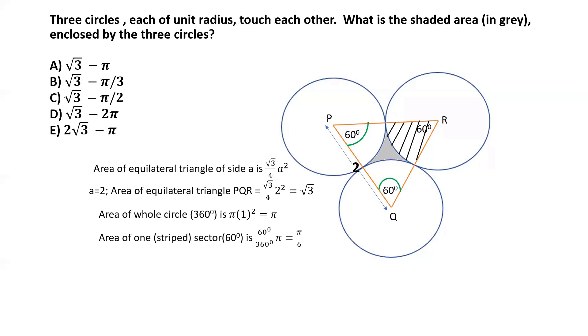So what would be the area of the 60 degree sector? The area of one such sector would be simply 60 degrees divided by 360 degrees multiplied by pi, which comes to pi by 6.